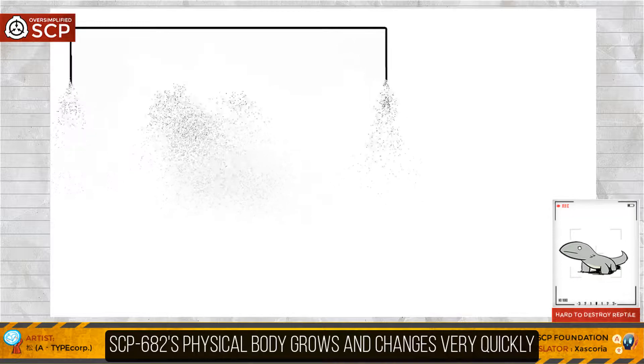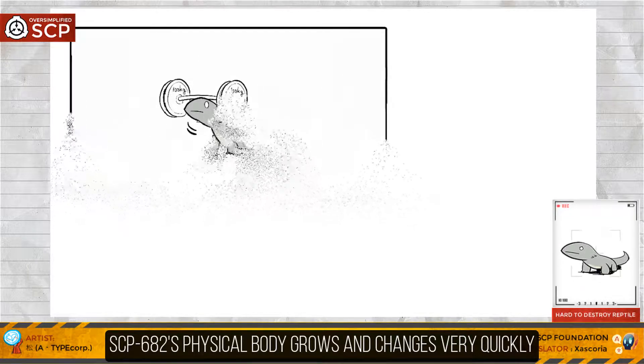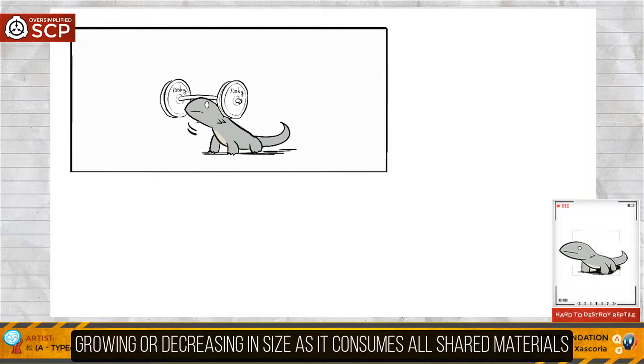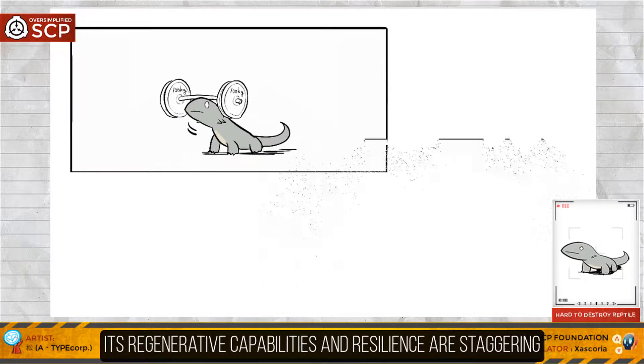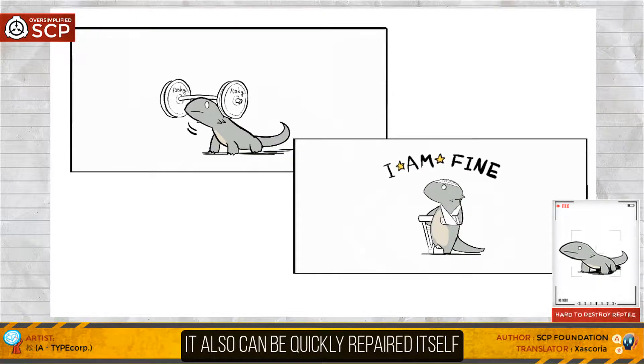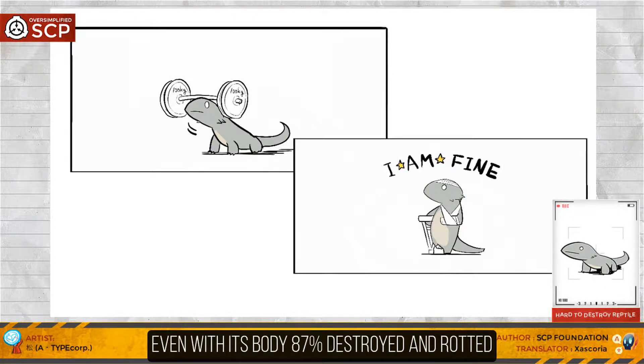SCP-682's physical body grows and changes very quickly, growing or decreasing in size as it consumes or sheds material. Its regenerative capabilities and resilience are staggering. It can quickly repair itself even with its body 87% destroyed and rotted.